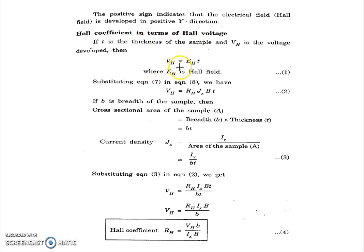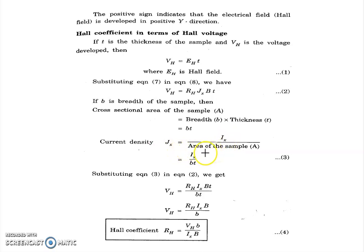The Hall voltage VH equals RH times JX times B. Substituting current density JX equals IX divided by the cross-sectional area, which is breadth times thickness (b times t), we get VH equals RH times IX divided by t. Therefore, the Hall coefficient RH equals VH times b divided by IX times B. Thank you.